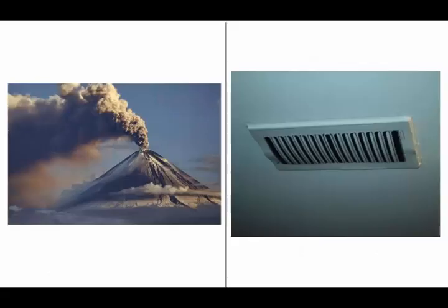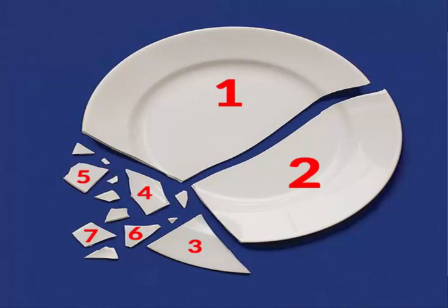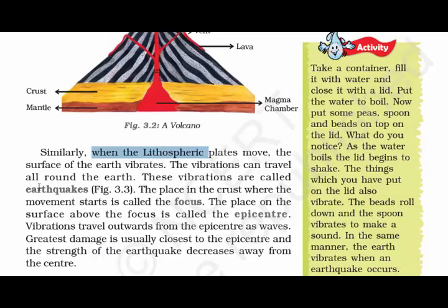A volcano is nothing but a vent on the earth's crust through which molten material erupts. When the lithospheric plates move, the surface of the earth vibrates. The vibration can travel all around the earth — these vibrations are called earthquakes. The place in the crust where the movement starts is called the focus, and the place on the surface above the focus is called the epicenter. Vibrations travel outwards from the epicenter as waves. Greatest damage is usually closest to the epicenter, and the strength of the earthquake decreases away from the center.